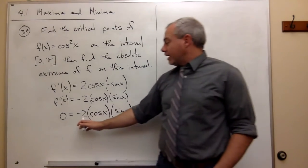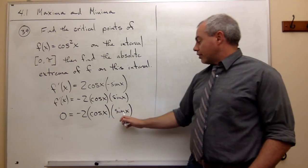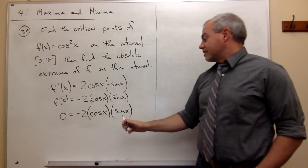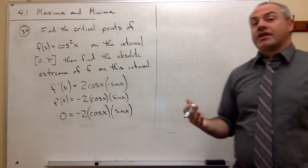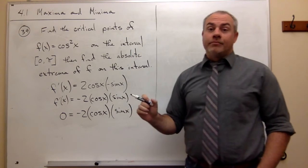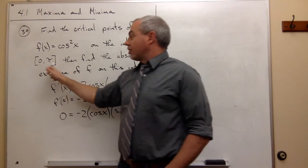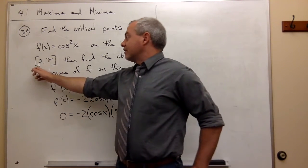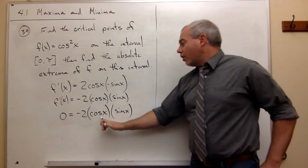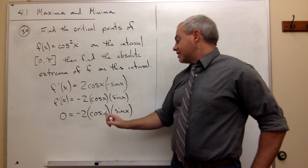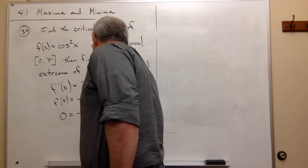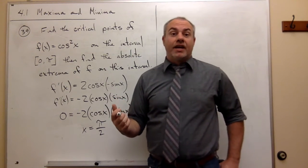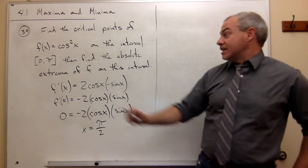Now, negative 2 is never equal to zero. So cosine of x could be zero, or sine of x could be zero — wherever either of those is zero, I would get a critical point. There are infinitely many places where cos(x) = 0 or sin(x) = 0, but I'm only interested in the ones that live between zero and π. For cosine of x = 0 with x in [0, π], there's only one: x = π/2, because cos(π/2) = 0, and that's the only value in the interval.